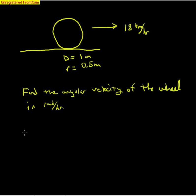Once again we're given some information. Here v is 18 kilometers per hour, and the radius is 0.5 meters. And we want to find omega.